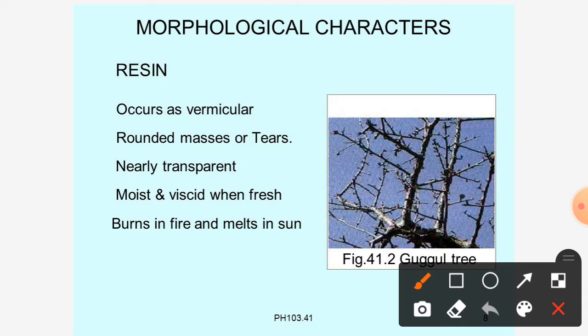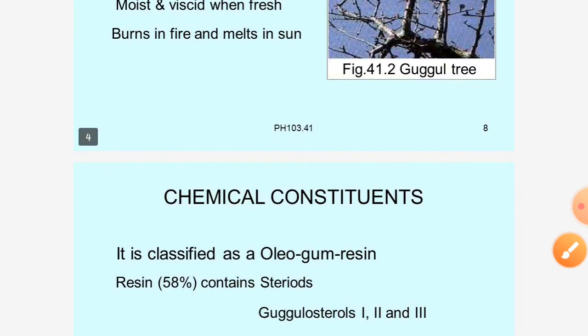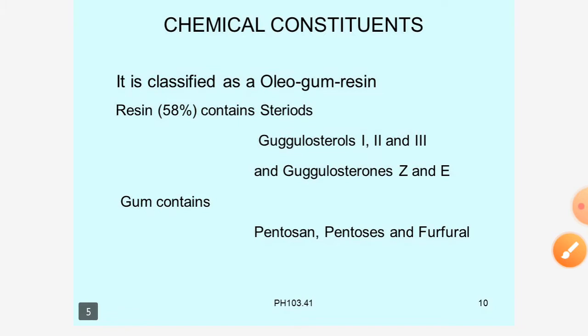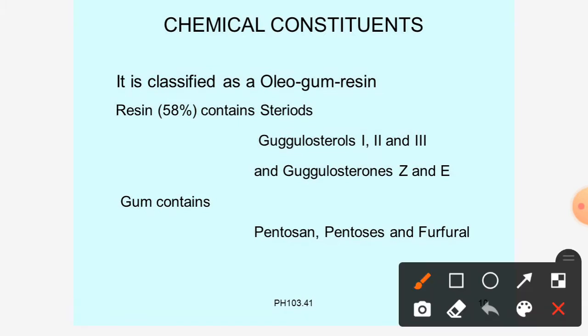Regarding morphological characters, Guggul occurs as vermicular rounded masses or tears. Since it is an unorganized crude drug, it appears as masses — similar to asafoetida. It is nearly transparent, moist, and dusty when fresh. When fresh it can burn in fire or melt in the sun.